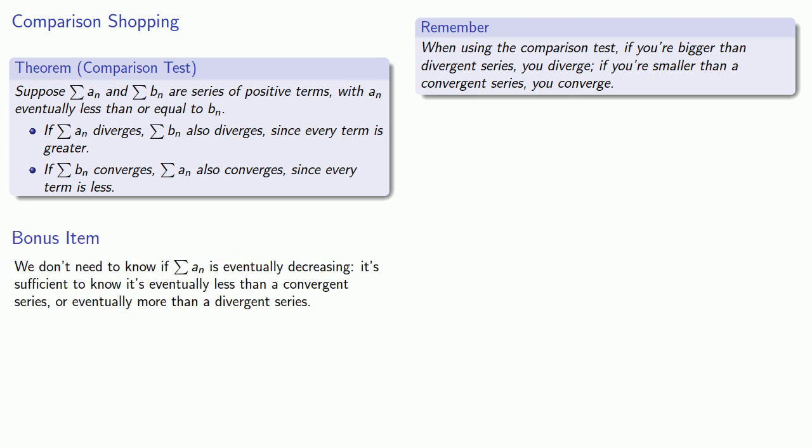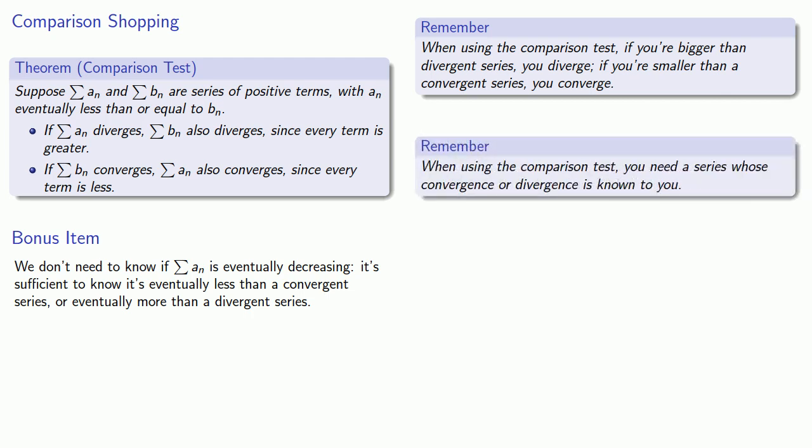There's a bonus item here. We don't need to know if our series are eventually decreasing. It's enough to know that we're eventually less than a convergent series or eventually more than a divergent series. This is a wonderful test with one minor flaw: when using the comparison test, you need a series whose convergence or divergence is already known to you.